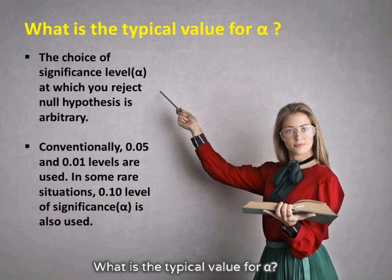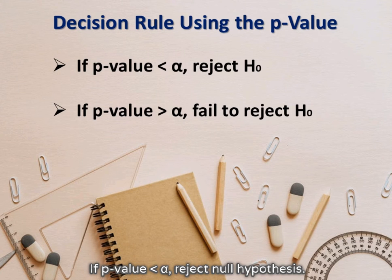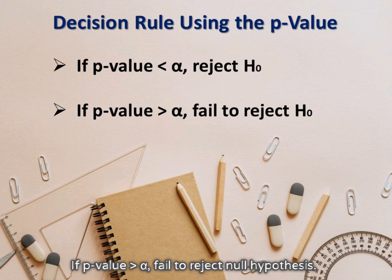What is the typical value for alpha? Conventionally, 0.05 and 0.01 levels are used. In some rare situations, the 0.10 level of significance alpha is also used. If p-value is less than alpha, reject the null hypothesis. If p-value is greater than alpha, fail to reject the null hypothesis.